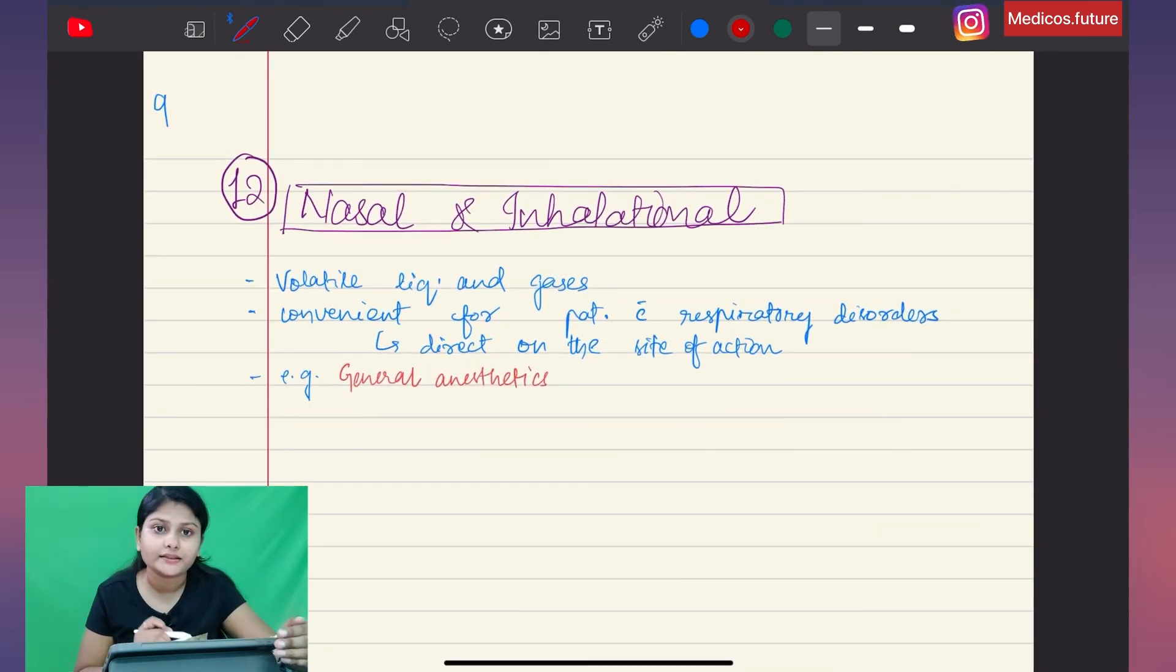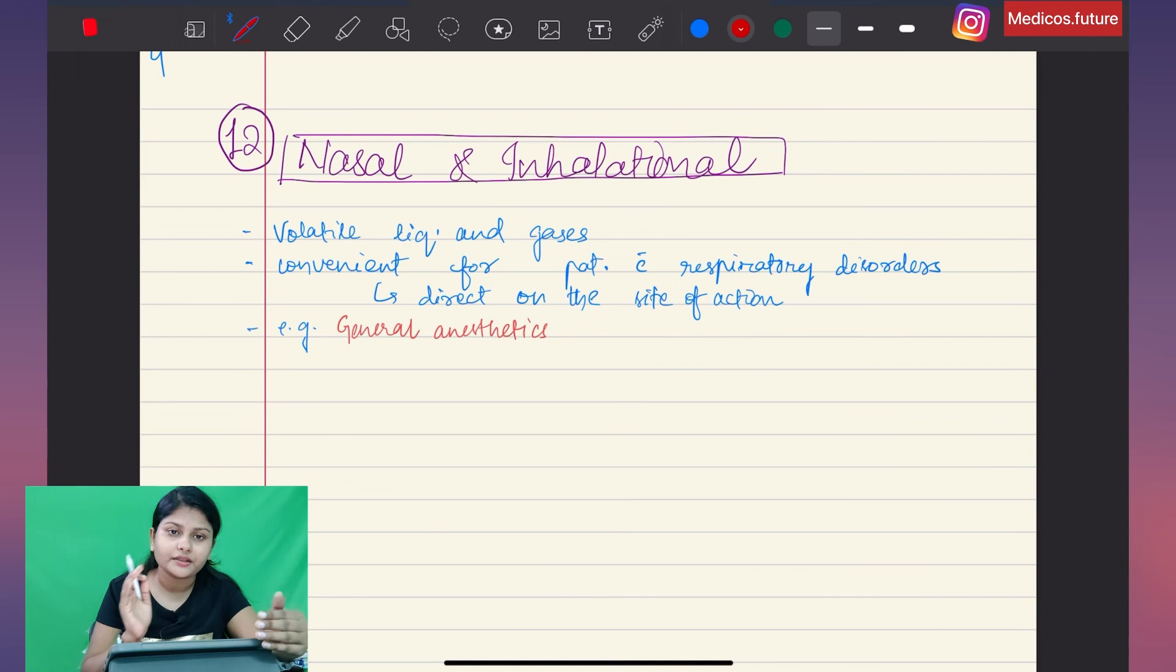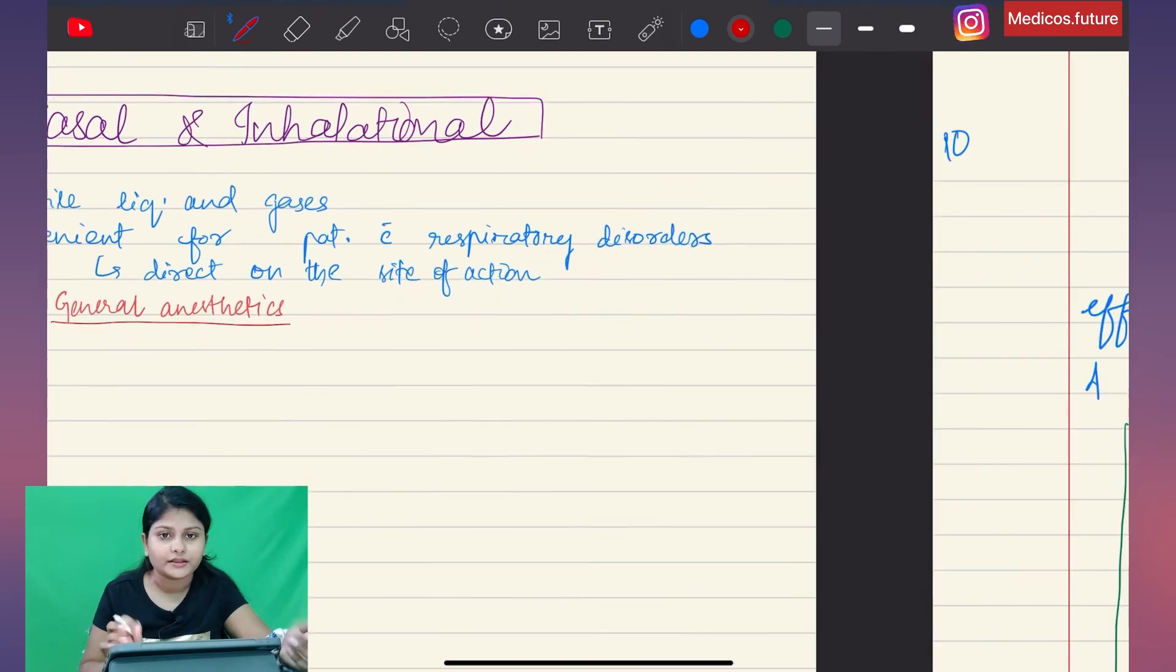The last topic is nasal and inhalational routes. Volatile liquids and gases are used for respiratory disorders. The drug will be administered directly to the site of action. An example is general anesthetics.